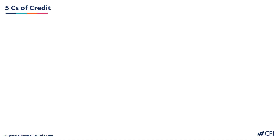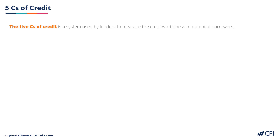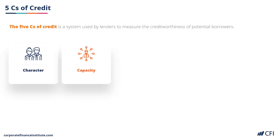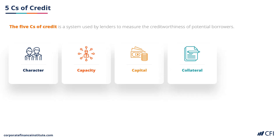The 5 C's of Credit is an important system that lenders use to measure the creditworthiness of the borrowers they're considering lending to. The 5 C's include Character, Capacity, Capital, Collateral, and Condition. Let's walk through each of these in a little bit more detail.